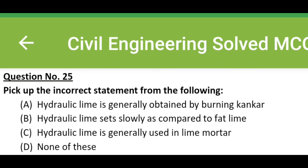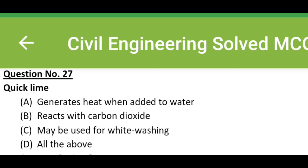Pick up the incorrect statement from the following: Option A, hydraulic lime is generally obtained by burning kankar. Option B, hydraulic lime sets slowly as compared to fat lime. Option C, hydraulic lime is generally used in lime mortar. Option D, none of these. The correct answer is option D, none of these.